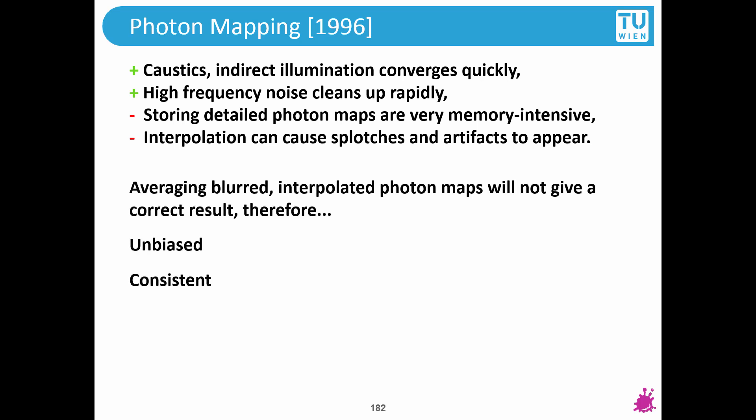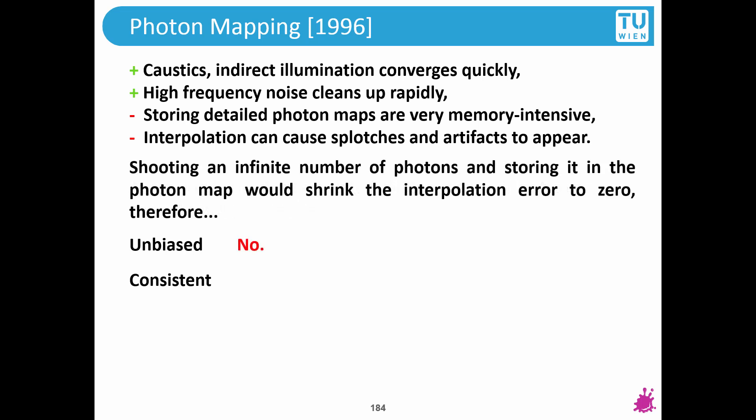What about this algorithm? Well, we are cutting corners. We are using interpolation. We are not computing all the possible light paths there are. Therefore, this algorithm has to be biased. What about the consistency? Well, it is consistent provided that you have an infinite number of photons in the photon map and therefore you always get perfect information. However, this is only of theoretical value because obviously having an infinite number of photons may make sense in a mathematical way. But in a practical implementation you cannot even shoot and you cannot even store an infinite number of photons.